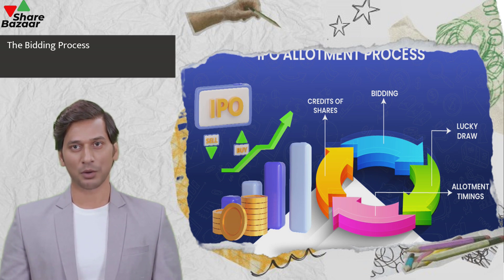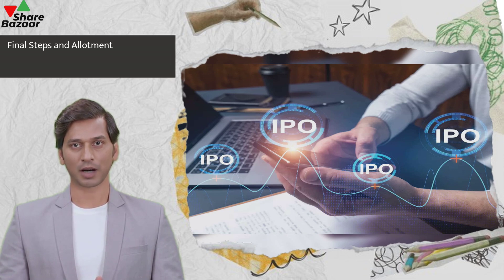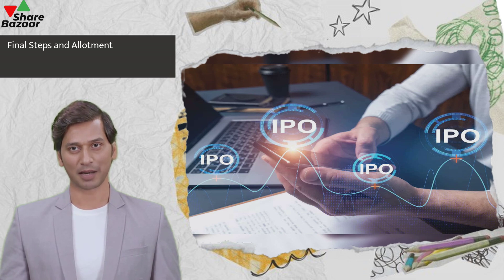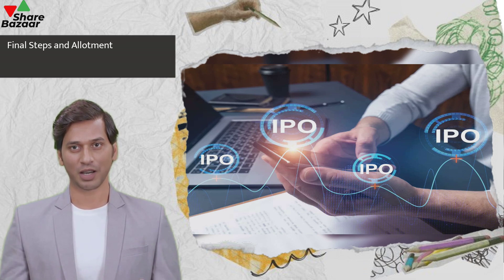Online applications are preferred for their convenience. To bid online for an IPO, use your trading platform's IPO page to select the IPO, enter the number of shares, and submit your bid. You will receive an IPO application number and transaction details. If the IPO is oversubscribed, you may receive fewer shares or none at all, and your blocked money will be released accordingly.